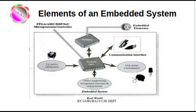A typical set of elements of an embedded system can be visualized as input ports, which can be sensors, and output ports, which can be actuators, with other supporting integrated circuits and subsystems in between — such as FPGA, ASIC, DSP, SOC, microprocessor, or controller. We may also have memory on board, and a communication interface to connect the embedded system to the outside world. These embedded systems are now very smart and don't require manual intervention — everything is automated.